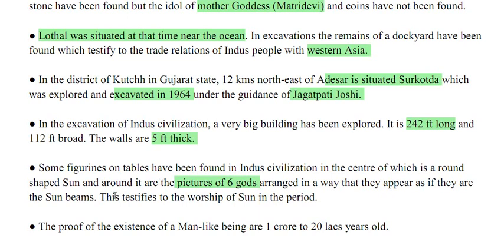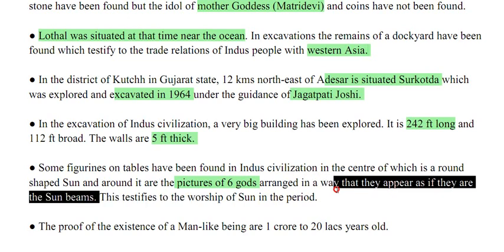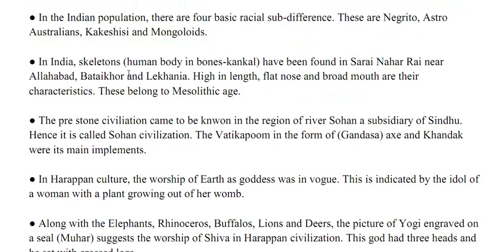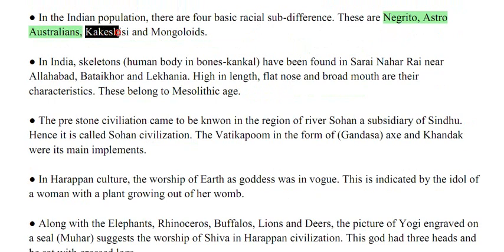The proof of existence of man-like beings are 1 crore to 20 lakh years old. In the Indian population there are 4 basic racial sub-differences: Negrito, Austro-Australians, Caucasus, and Mongolites.